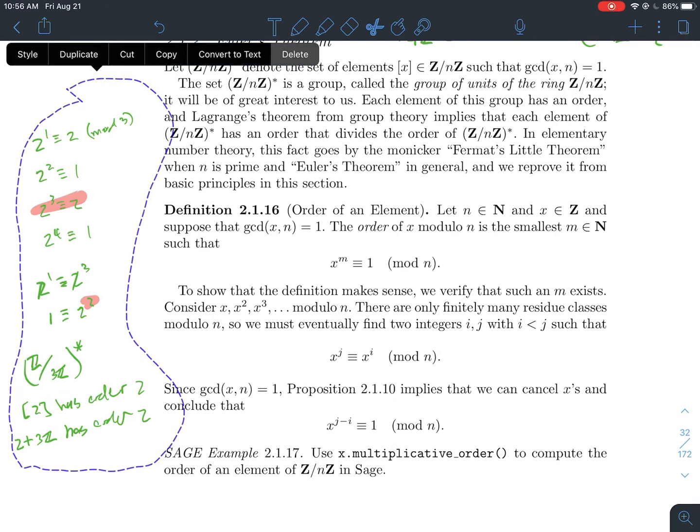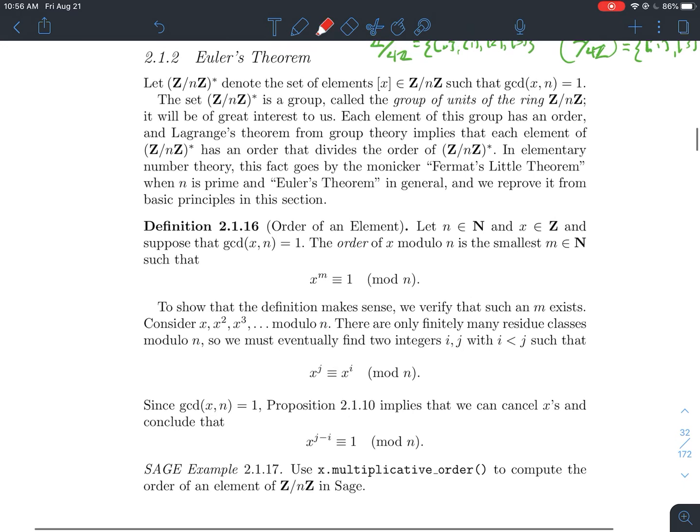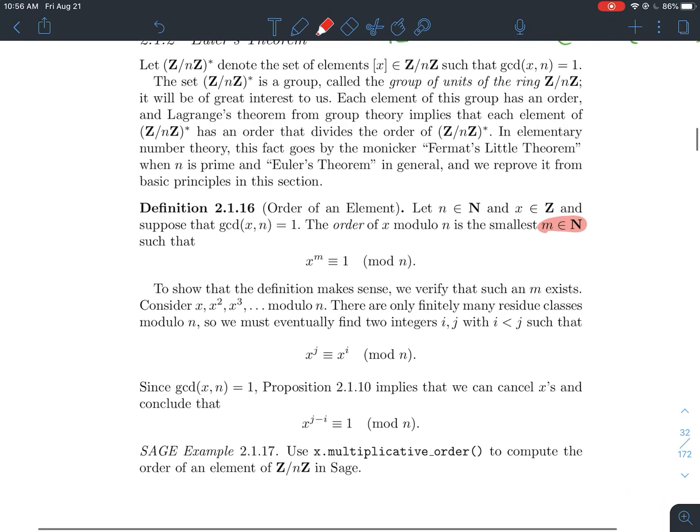So what is the order of an element? It's just the smallest natural number, so that when you raise that element to that exponent, you get 1 back.